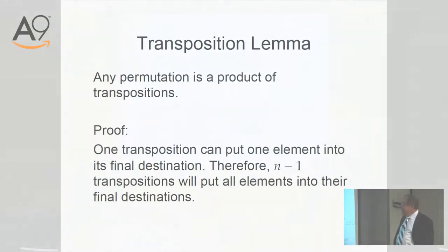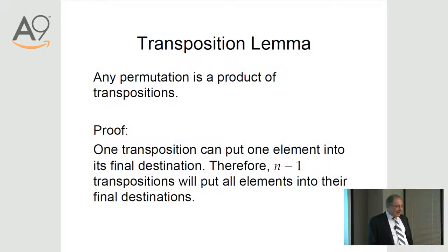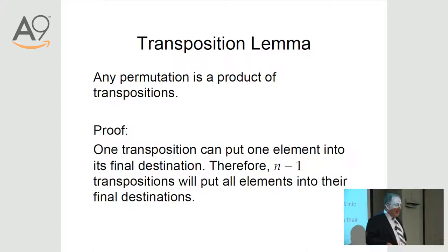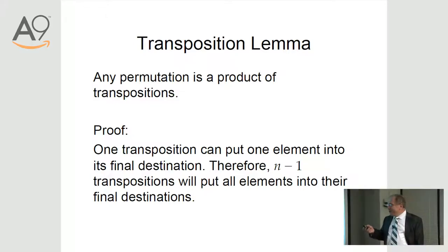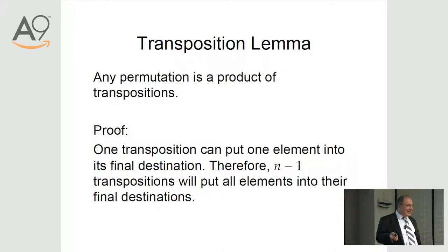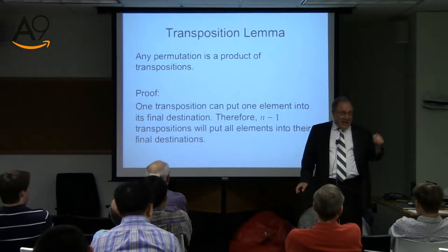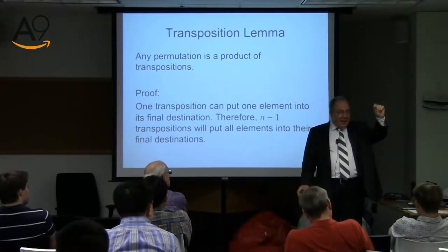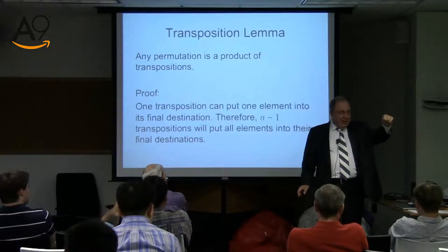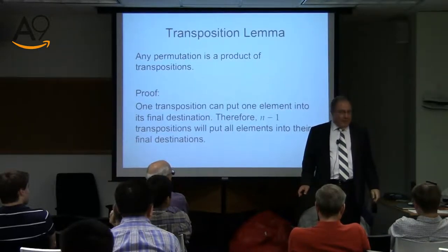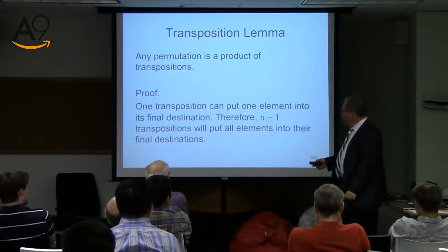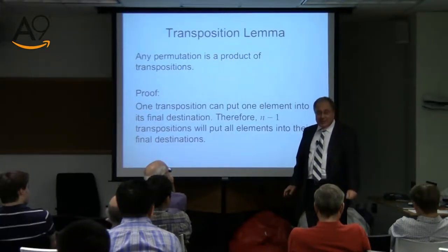Any permutation is a product of transpositions. For us, it's a fact of life. You could do anything you like with swap. One transposition can put one element to its final destination. So if we know the first element goes into the fifth position, we could do it with a swap. And with N minus one transpositions, we will be done. Why N minus one? The last guy is just there — we don't need to put him.